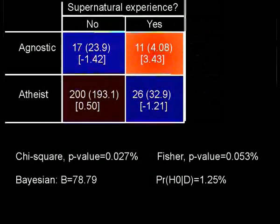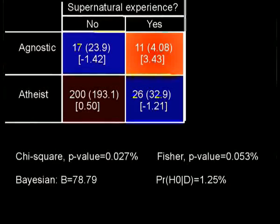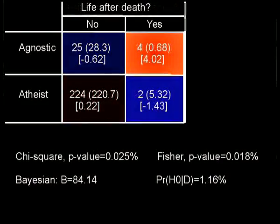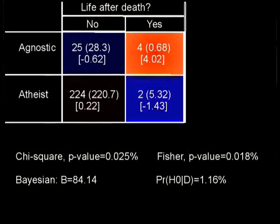Supernatural experience: more than a third of agnostics say they have experienced something supernatural, which is way more than expected under H0. The frequentist tests dip below the significance level for a string of tests. The Bayes factor isn't as strong as I would have liked yet, but it's getting pretty strong. Life after death — yes or no: more agnostics than expected answered yes. Four answered yes, and there were only two atheists out of 226. So the rate is much smaller for atheists than for agnostics. The frequentist tests dip below the significance level, and the Bayes factor is just as high as for the last one.